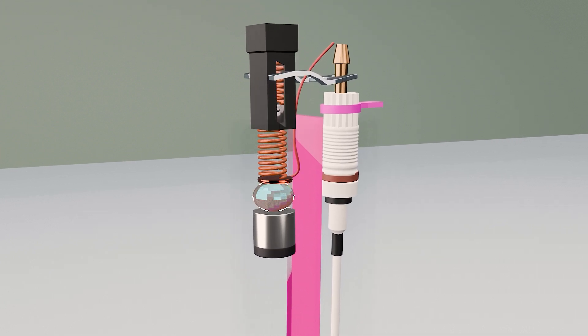Inside the lighter, there is a piezoelectric crystal, which generates a small amount of voltage when struck.